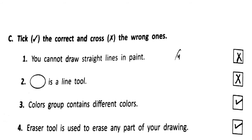Tip the correct and cross the wrong one. The statement that is correct, we will put a tick mark; the one that is wrong, we will put a cross mark. Number 1: you cannot draw shapes or lines in Paint. Can you draw lines in Paint? No — we will cross it.